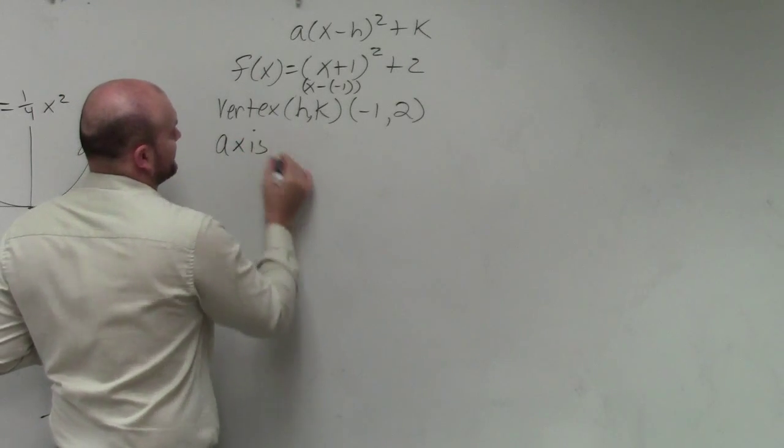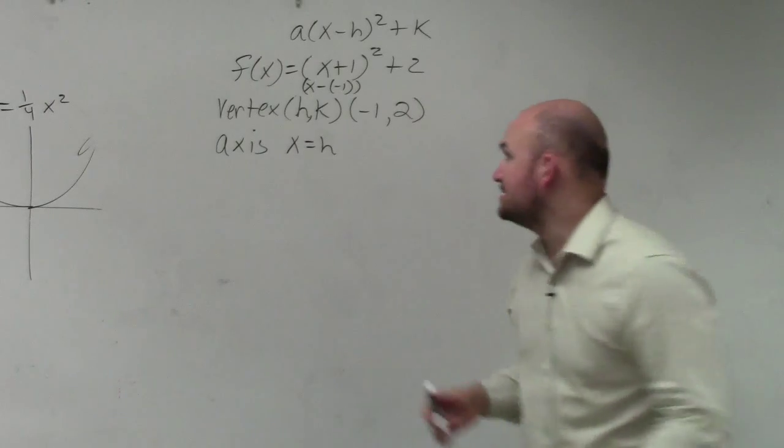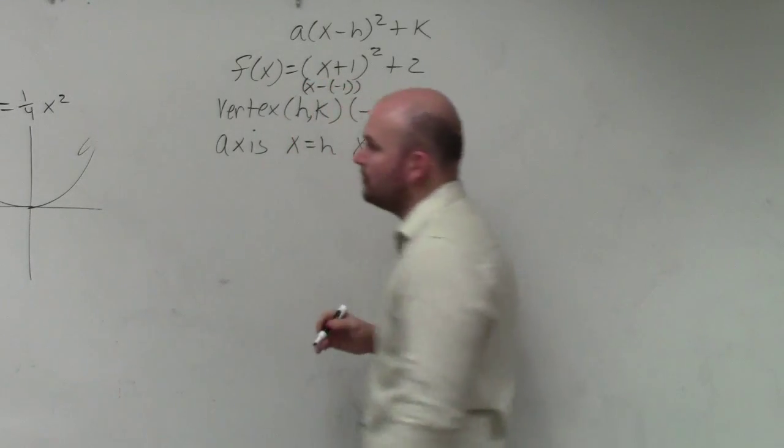My axis of symmetry is x equals h. Well, since my h in this case is negative 1, x equals negative 1.